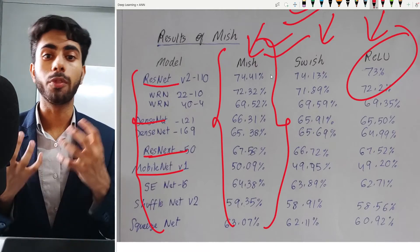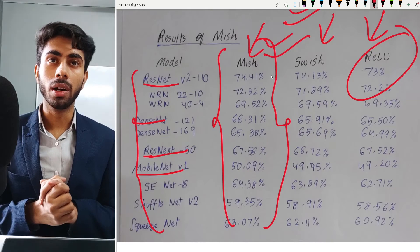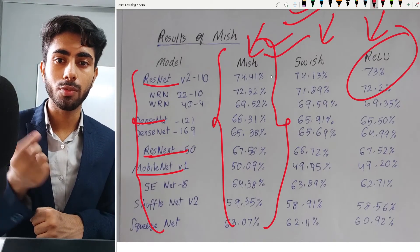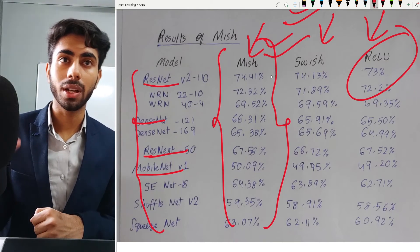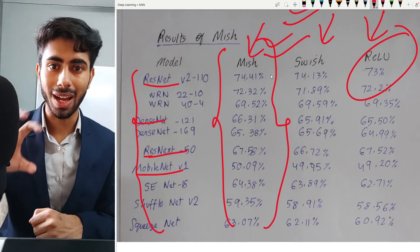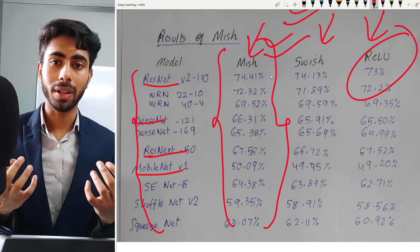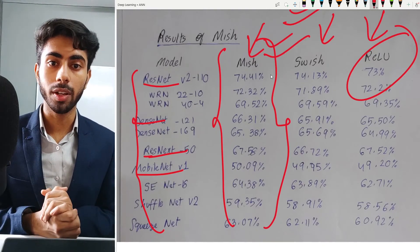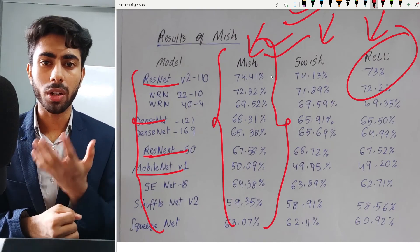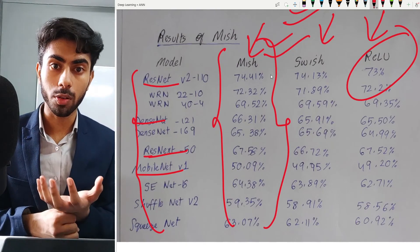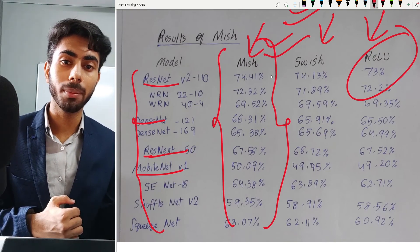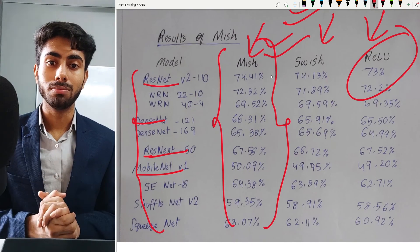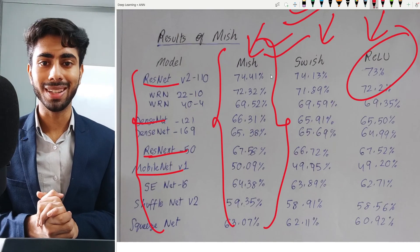That was all for today. In this video we learned everything you needed to know about mish activation, and briefly discussed all the activation functions covered so far in the form of a story. In the next video we will be learning about loss functions — why we need them — and we will be dealing with basically every kind of loss function. We will meet in the next video; until then, bye.